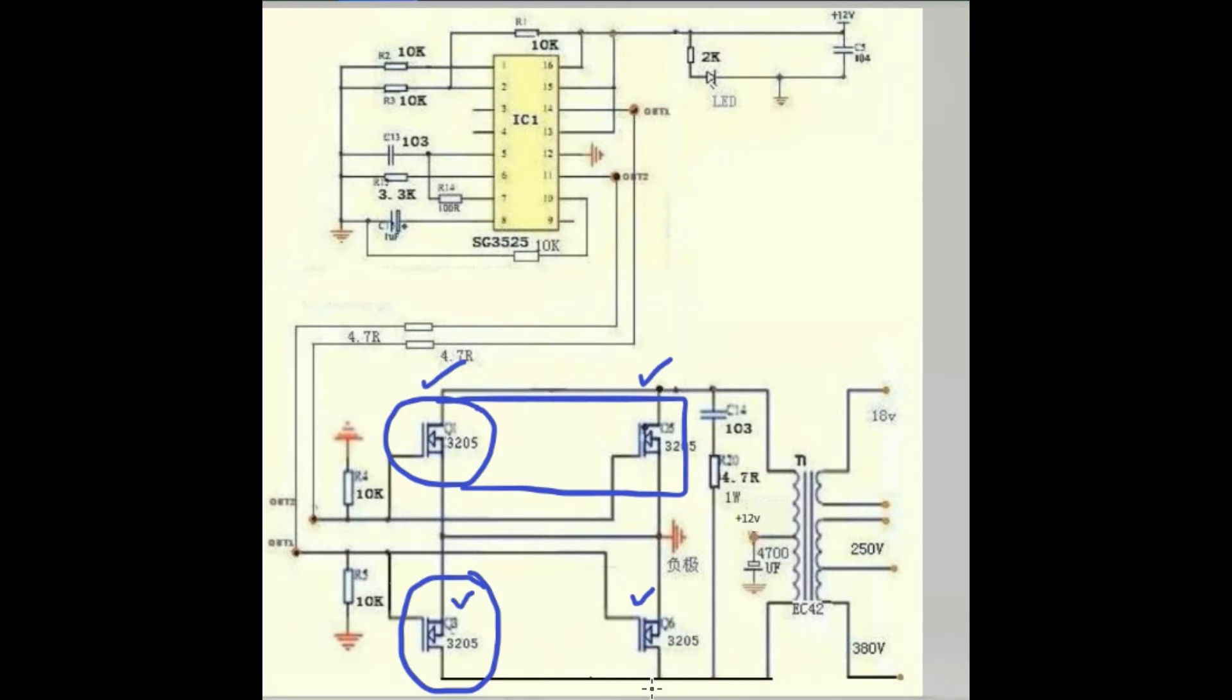Okay, so simple. The center tapping of the transformer is connected to the 12 volt battery and there is a smoothing capacitor of 4700 microfarad, and about the turns...